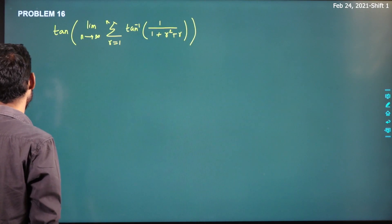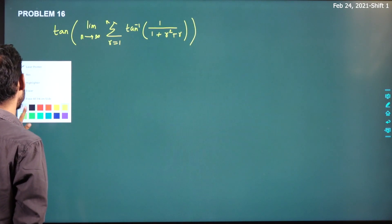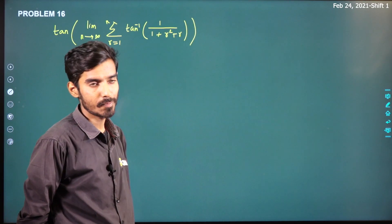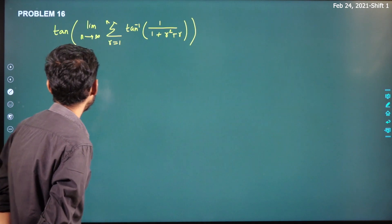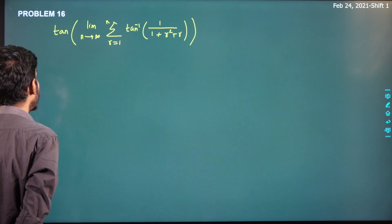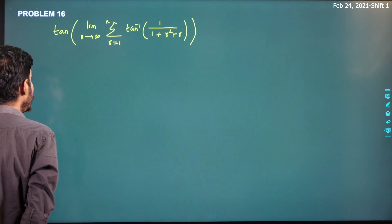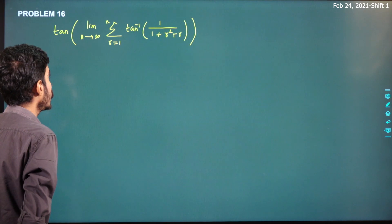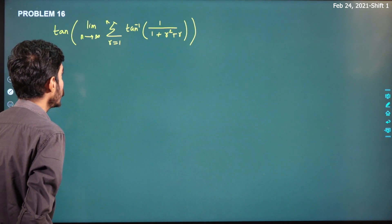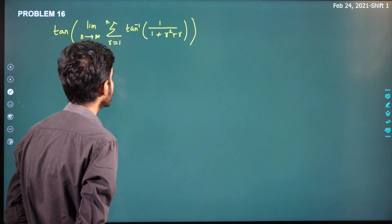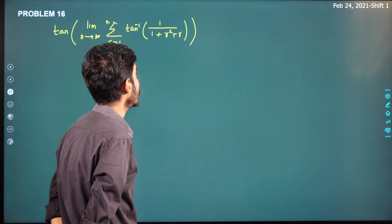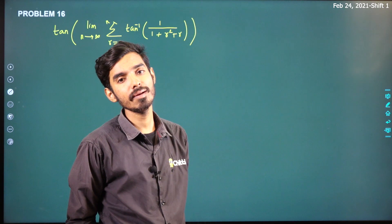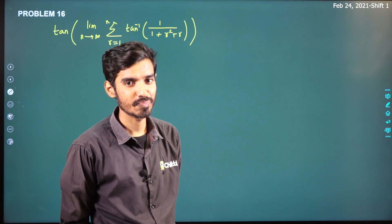So the 16th problem — the solution is a very easy problem. We need to find: tan of limit n tending to infinity, summation r from 1 to n, of tan inverse of 1 divided by 1 plus r squared plus r.